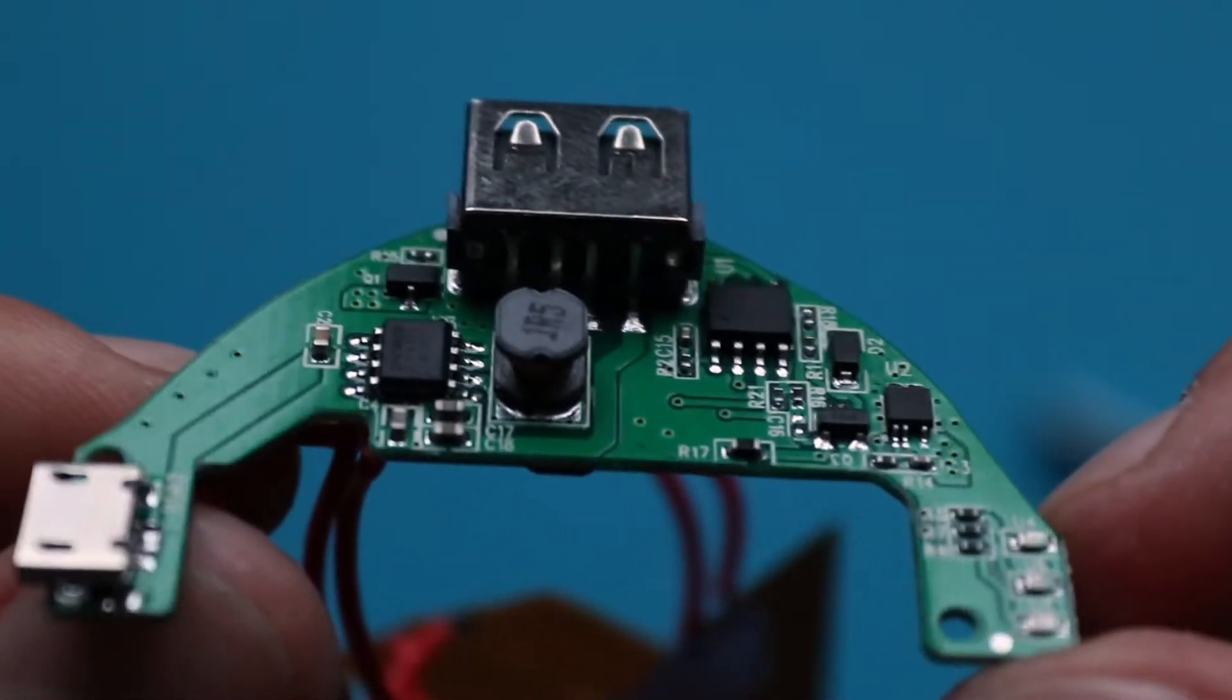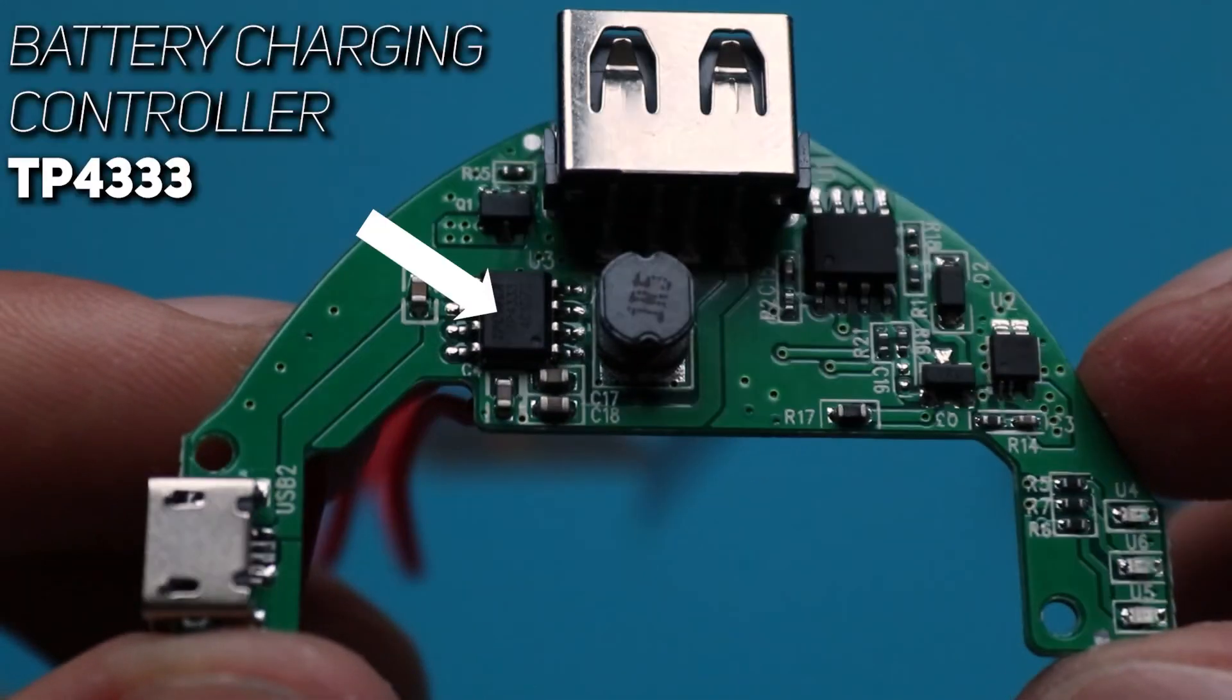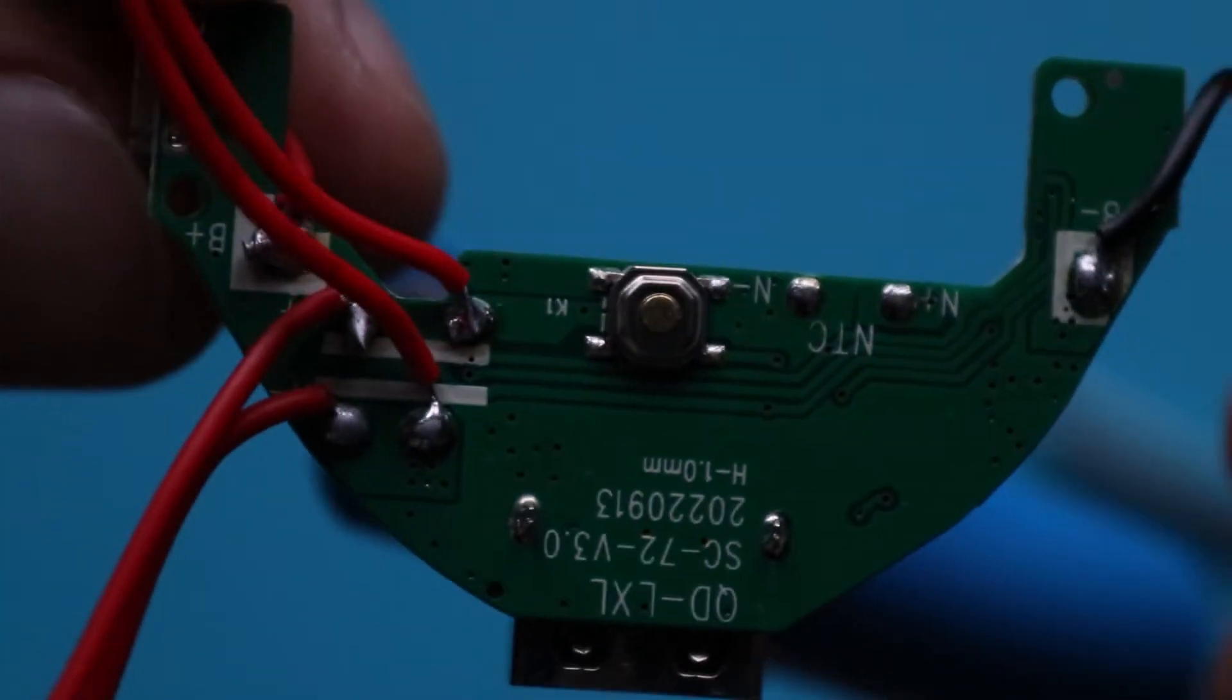To control all this mess, there are two integrated circuits. One is a battery charging controller, another one is probably some cheap and simple microcontroller, that tracks button presses and turns heating on and off. I am not sure which controller is that, because there is no marking on it.